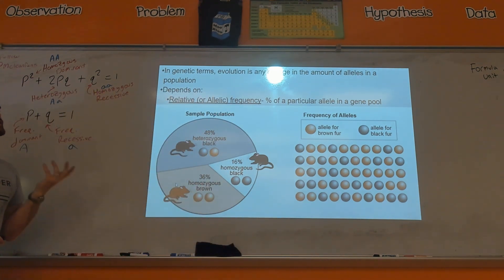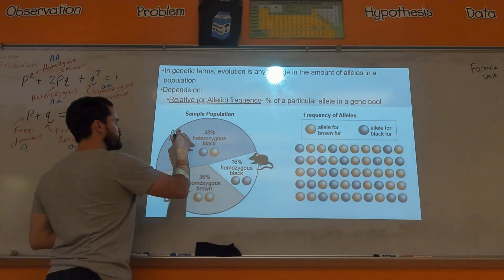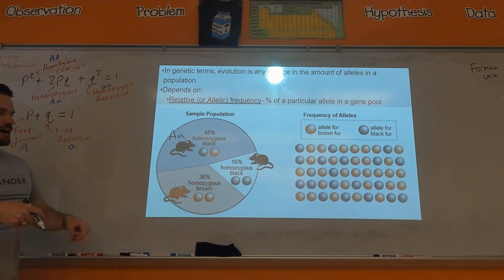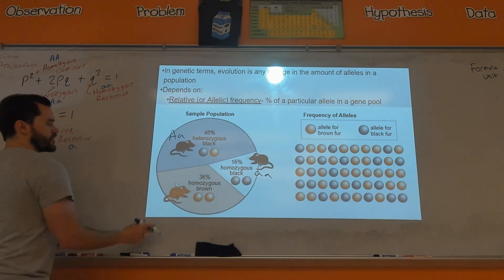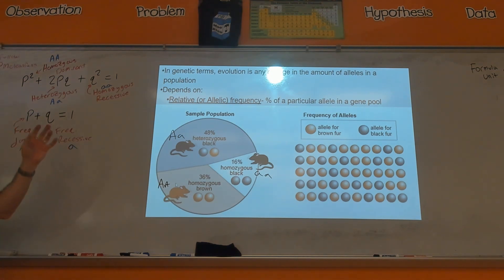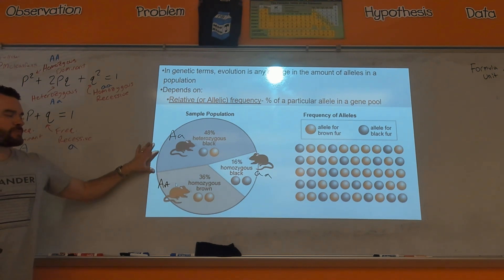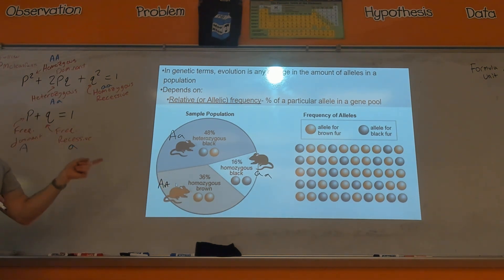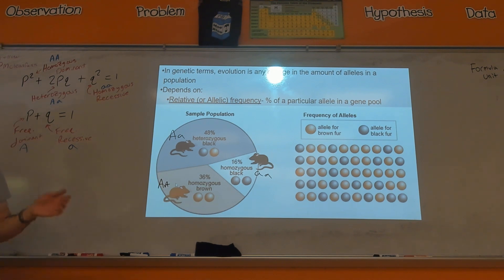Allelic frequency is the percentage of a certain allele in a population. For example, if you're heterozygous black, you're big A little a. So 48% of mice might have big A little a, 16% would be little a little a, and 36% would be big A big A. These percentages — the frequency of the brown fur allele or the black fur allele — can differ between populations or change within one population over time if that population is evolving.